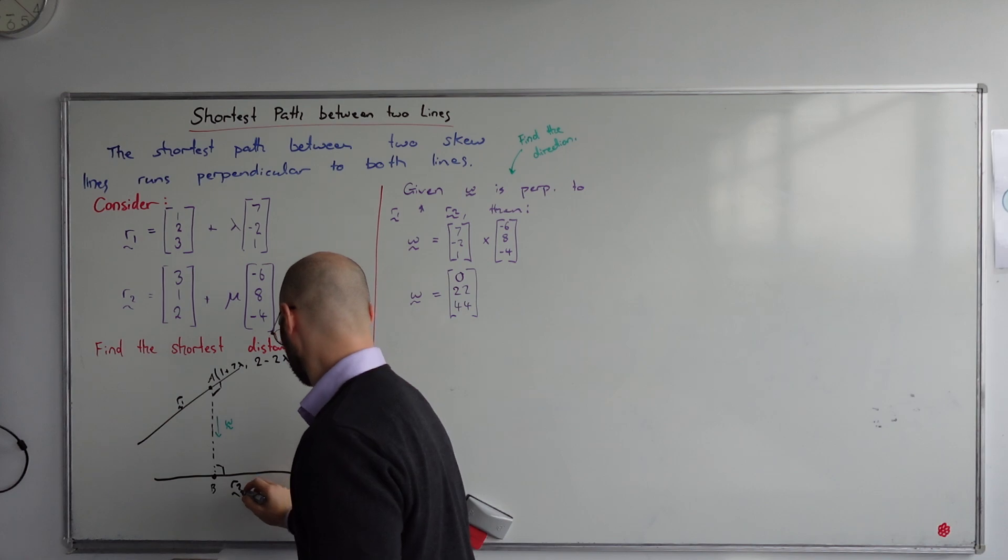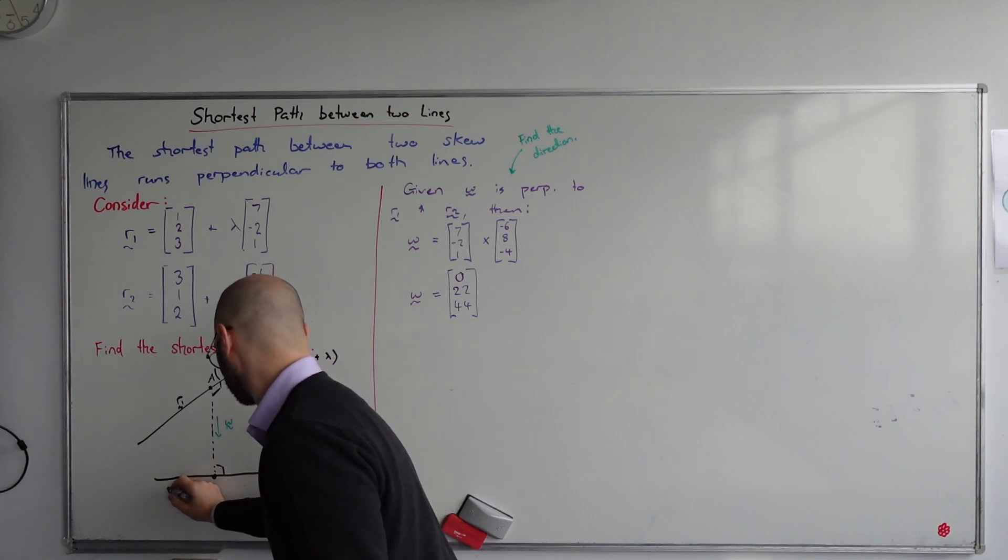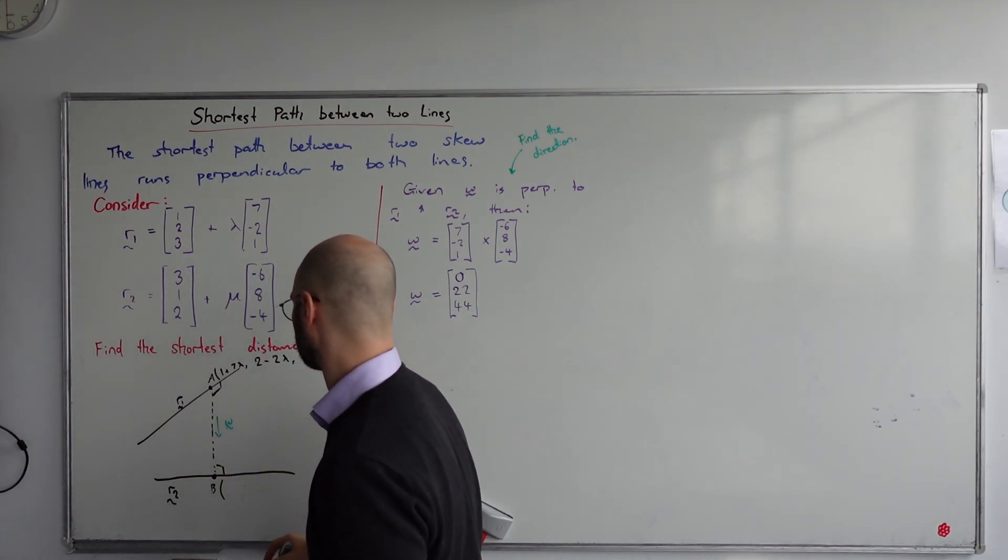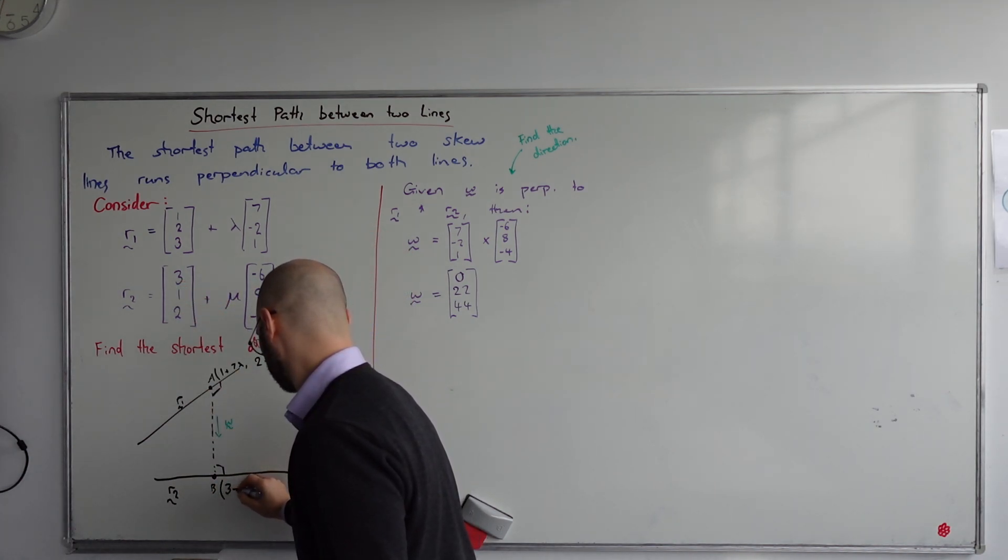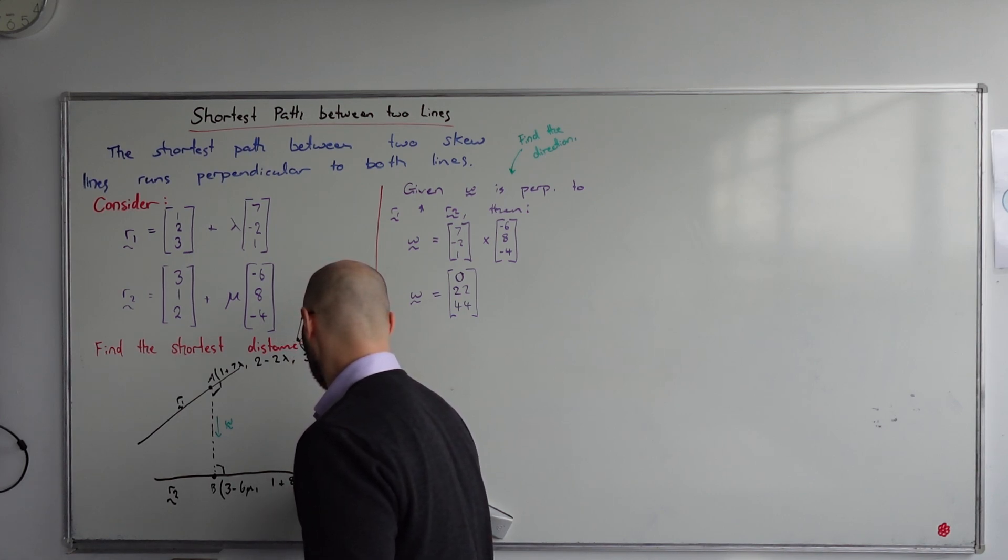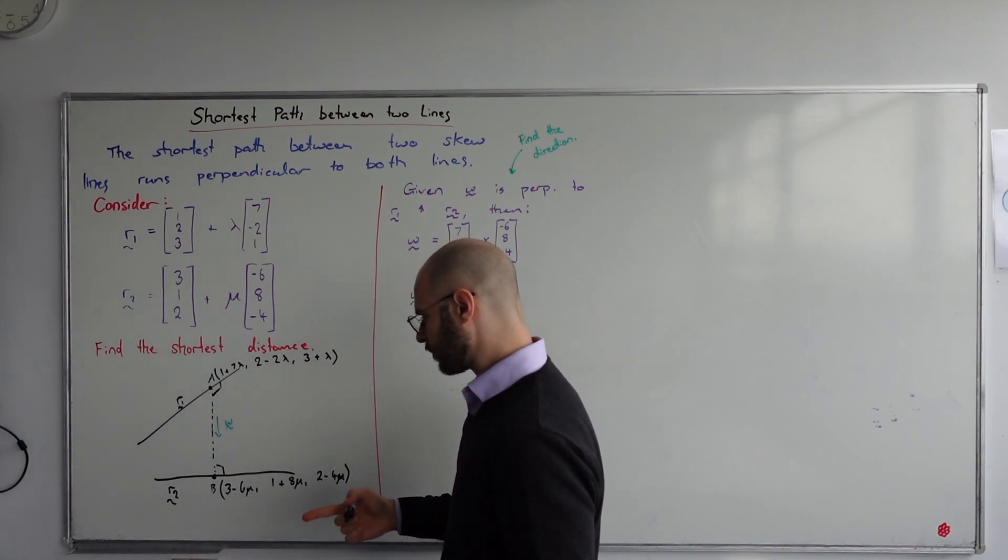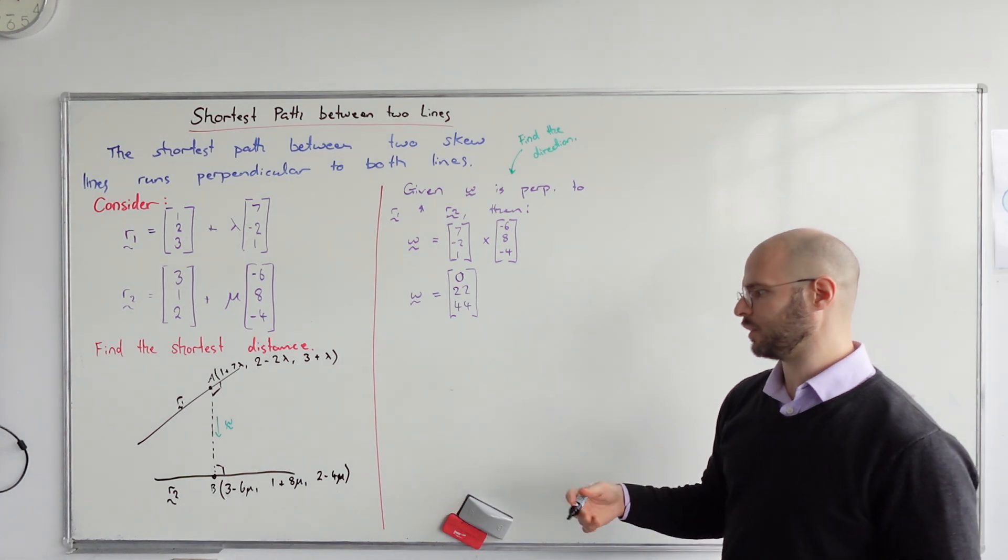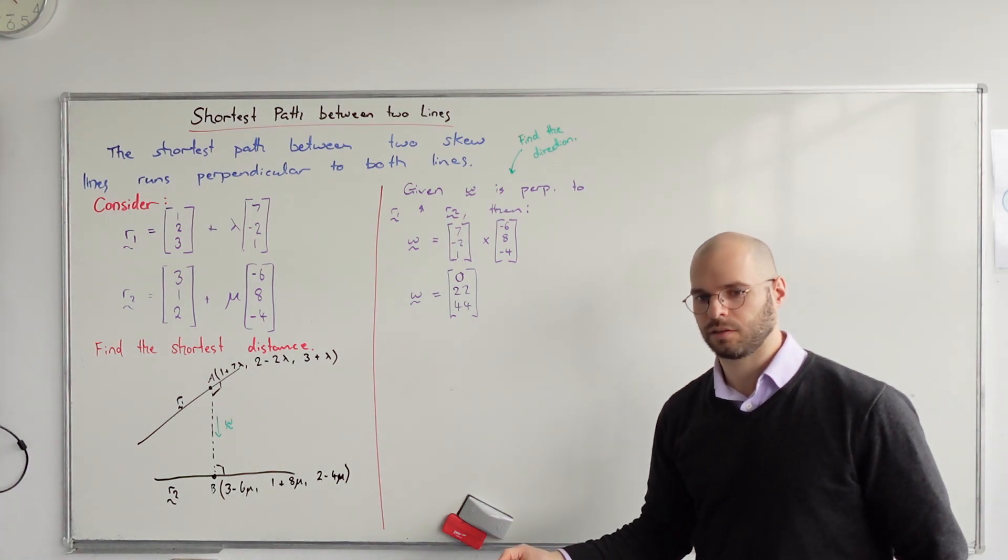Point B is at (3 - 6μ, 1 + 8μ, 2 - 4μ). So these are our points. We don't know exactly where they are, so we just got to leave them in terms of lambda and mu.